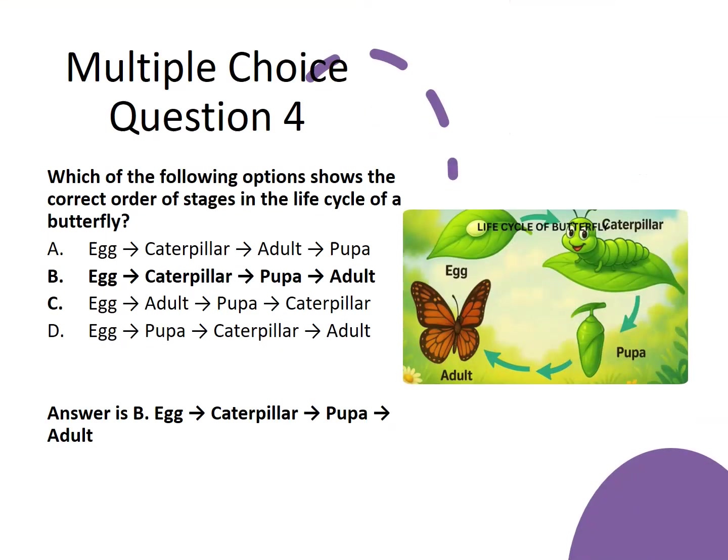Which of the following options shows the correct order of stages in the life cycle of a butterfly? The answer is B: egg, caterpillar, pupa, adult.